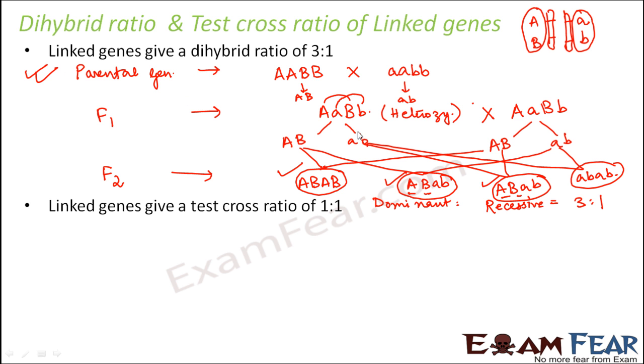But if it had not been a linked gene, in that case you would have got 2 more gametes here. So when you get 2 more gametes, what happens? You get more combinations. So when you get more combinations, your F2 generation output also changes.